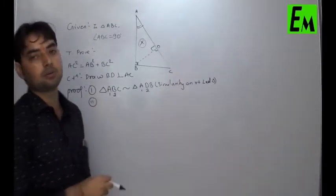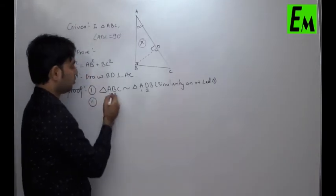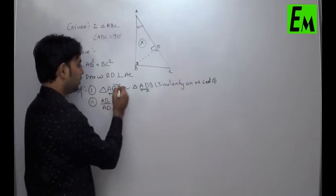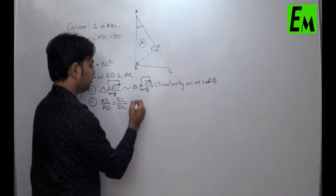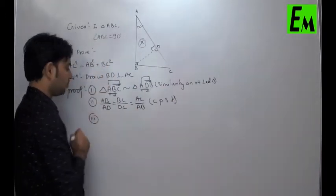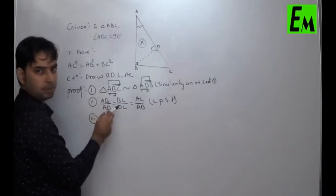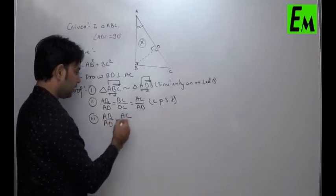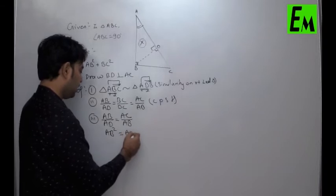Second point: we will write the corresponding sides because we want to find a side relationship. The corresponding sides are: AB/AD = BC/DC = AC/AB. These are the corresponding parts of similar triangles. We want AB². Here AB appears in two ratios. We take: AB/AD = AC/AB. Cross-multiplying: AB² = AC × AD.